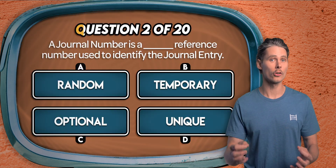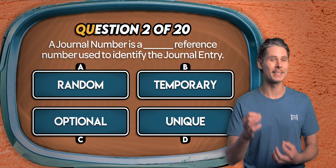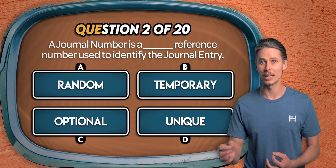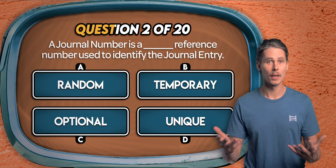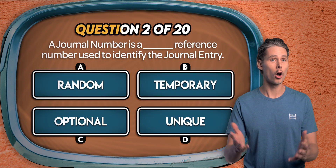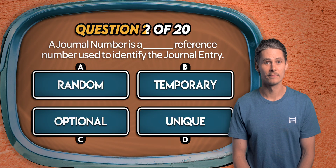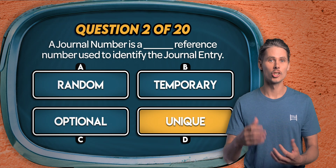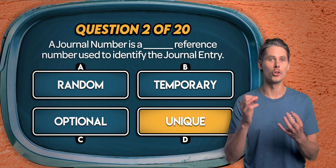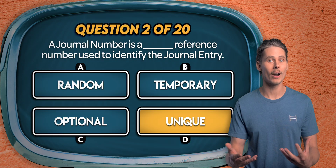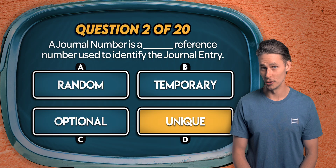Question 2. A journal number is a reference number used to identify a journal entry — but is it random, temporary, optional, or unique? It's D. Journal numbers are unique reference numbers that help us track and identify transactions.